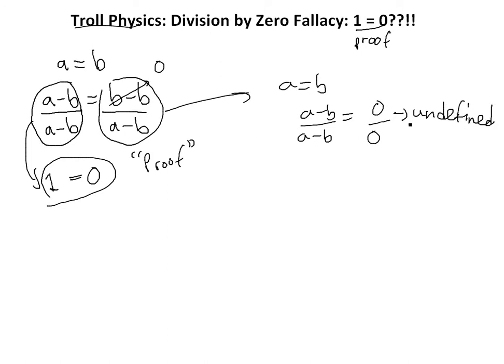So you cannot do this in any random equation and prove, because otherwise you can prove that 1 equals anything, or any number equals any number. And also the B over B, this one is equal to 0, and then A minus B equals to 0, so again you have a 0 over 0, which is undefined again.